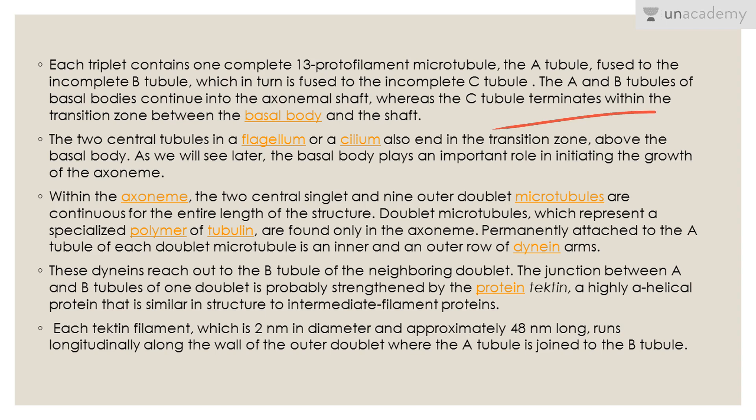The two central tubules in a flagellum or cilium also end in the transition zone above the basal body. The basal body plays an important role in initiating the growth of the axoneme — it is from the basal body that the axoneme and therefore the cilia and flagella arise. Within the axoneme, the two central singlets and nine outer doublet microtubules are continuous for the entire length of the structure. The doublet microtubules represent a specialized polymer of tubulin found permanently in the axoneme.